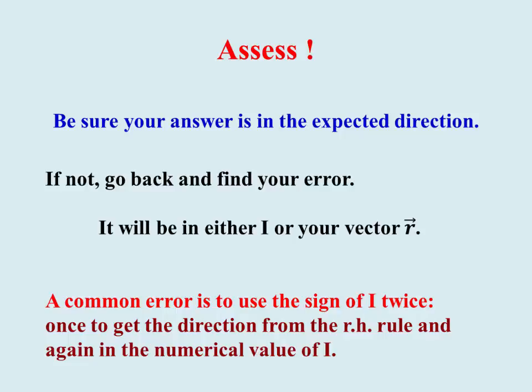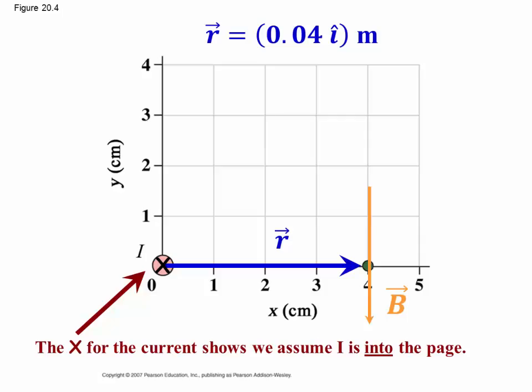A common error is to use the sign of the current twice. Once they get the direction from the right-hand rule, doing that sort of separately by hand, and again a numerical value of the current. I want to illustrate this.